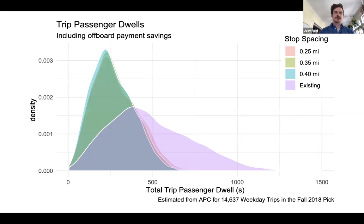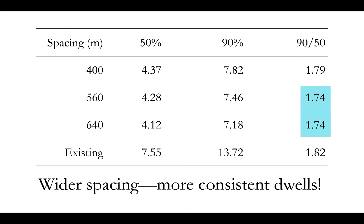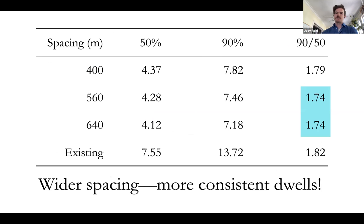That results in this distribution of outcomes. The purple is the existing scenario and you can see quite a range of total trip dwell times. In the new scenarios it's compressed, and this also accounts for the shift to off-board payment. Looking at the summary, at the 50th percentile we saved almost half the time. Similarly at the 90th percentile, the ratio of 90th to 50th percentile shows we are improving reliability in the two wider stop spacing scenarios, giving route planners options and information to act on.